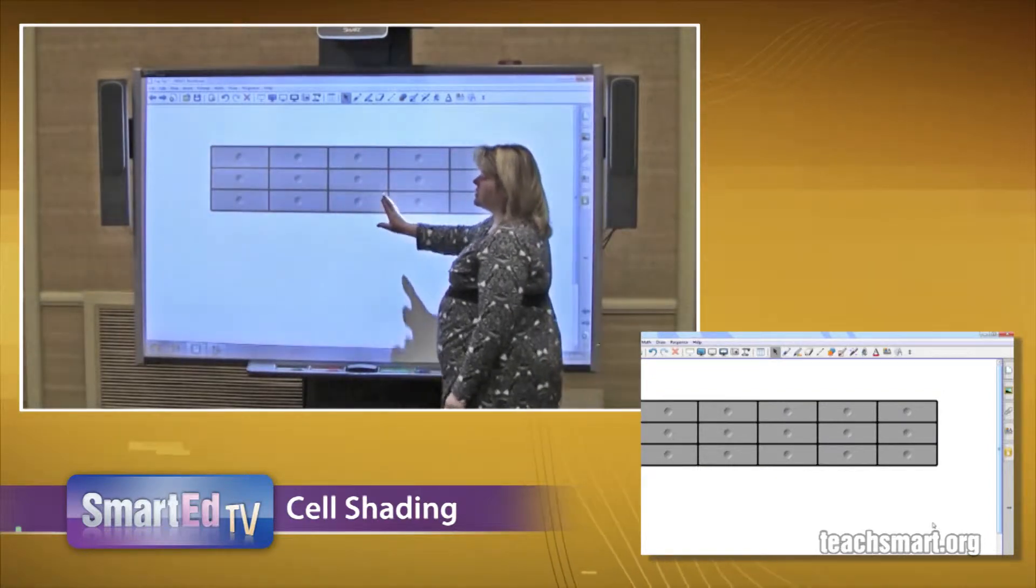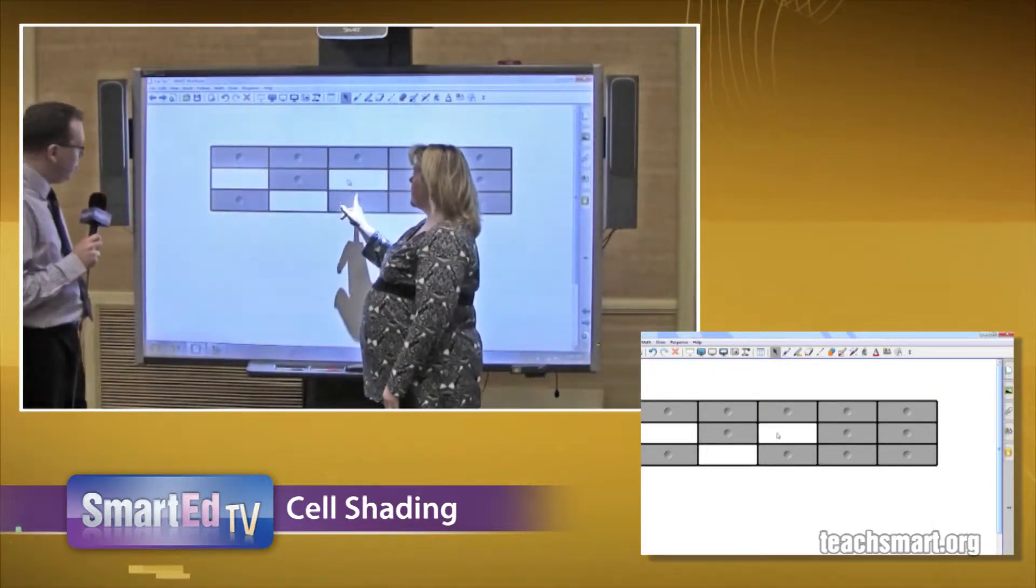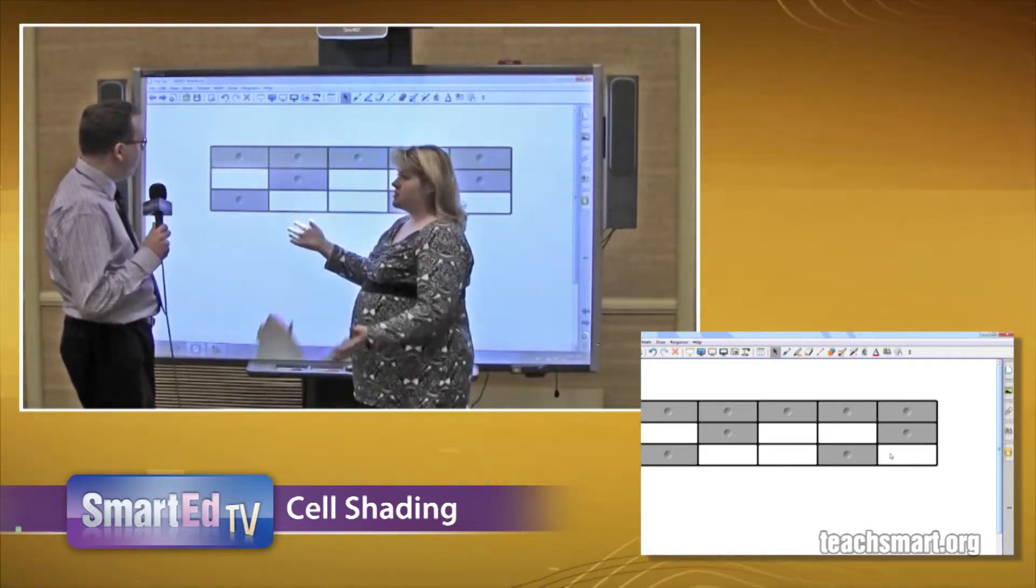So now my table is shaded and if I had information in my table, I can take out those cells and I can reveal information. So I can reveal information that the students are learning.